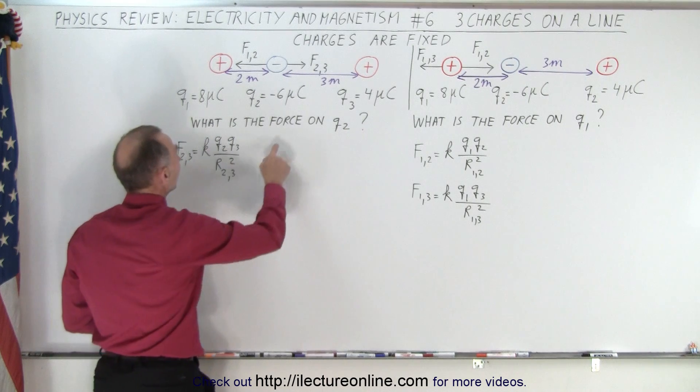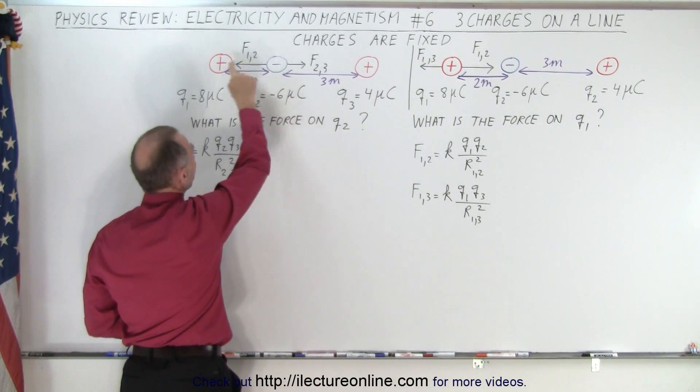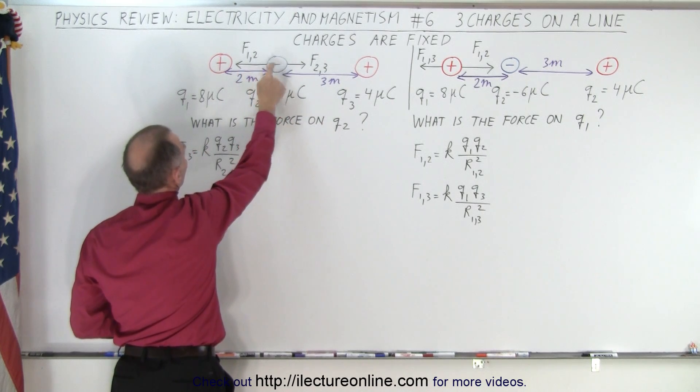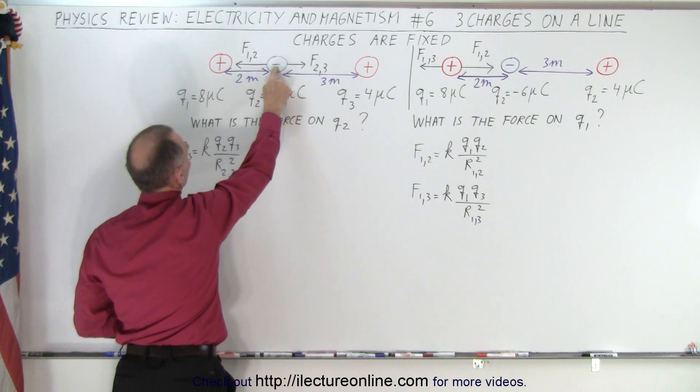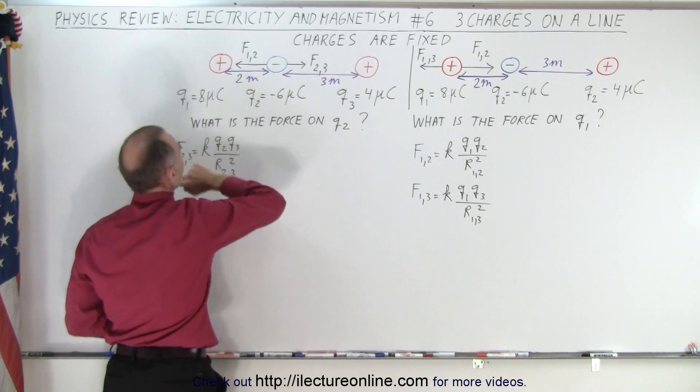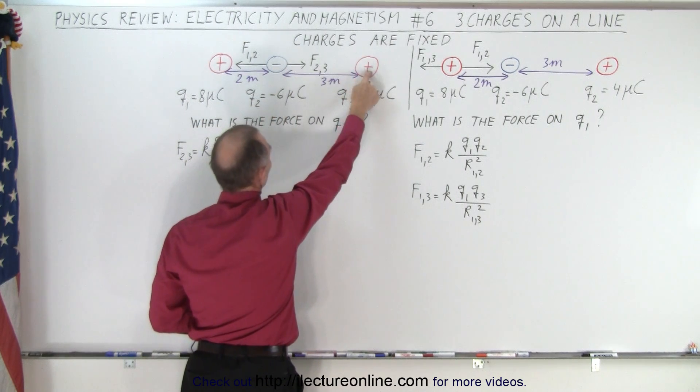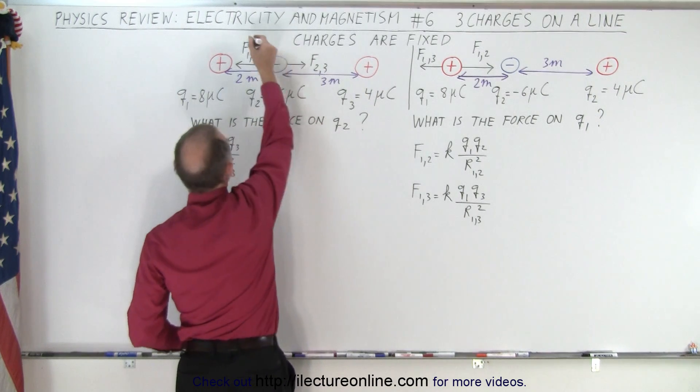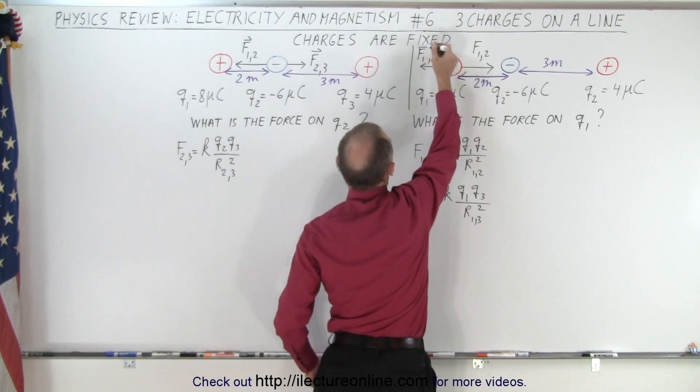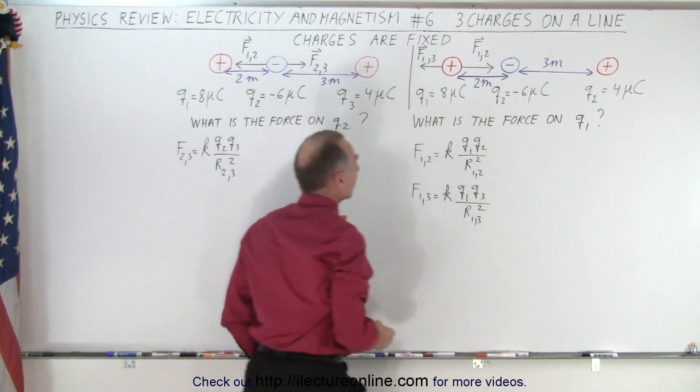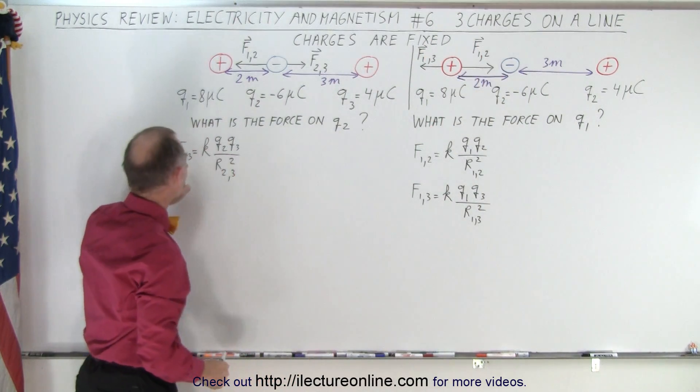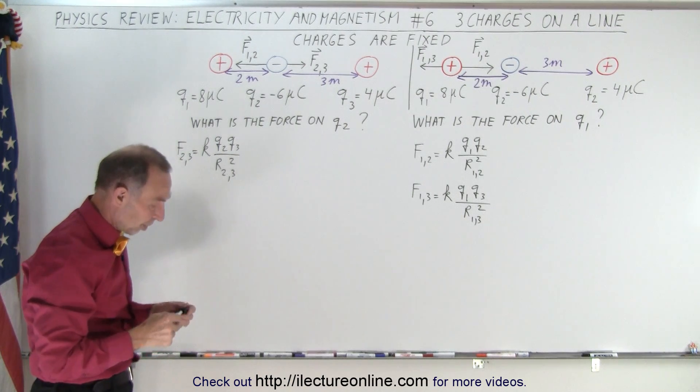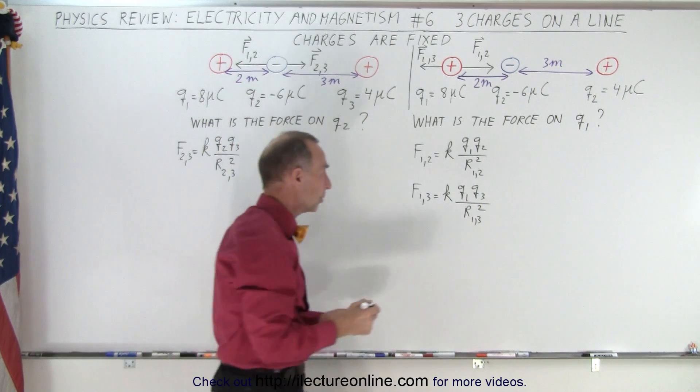Over here we're asked to find the force on the middle charge, Q2, due to the presence of 1 and 3. So here again we draw the vectors, we have a vector in this direction saying this charge is being attracted to the left due to this charge, and this charge is being attracted to the right due to this charge. We probably want to put little arrows on them because we realize that they're vectors, and now we need to find the magnitude between 2 and 3 as well. So once we have those three magnitudes, we can then do the vector sum. So let's go ahead and do that, plug in the numbers and see what we get.